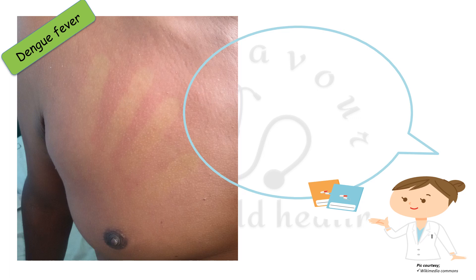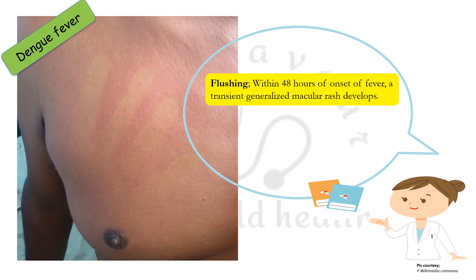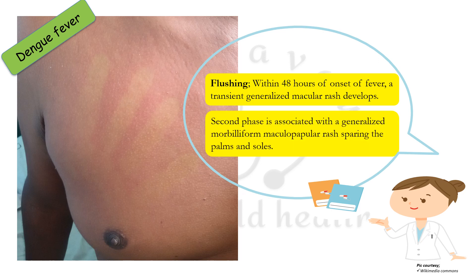In dengue fever, as seen in the picture, there is diffuse erythema — pressing four fingers on the trunk leads to blanching, which is the typical blanching of dengue fever. Flushing is seen within 48 hours of fever. A transient generalized macular rash develops within 48 hours of onset of fever. The second phase of illness is associated with a generalized morbilliform maculopapular rash sparing the palms and soles.